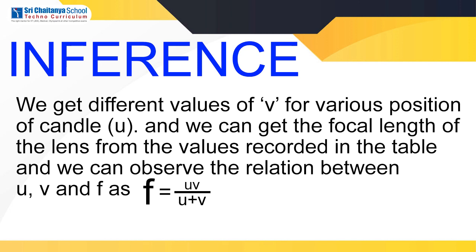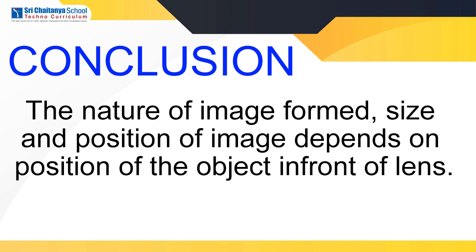Inference: we get different values of V for various positions of the candle, that is U, and we can get the focal length of the lens from the values recorded in the table. We can observe the relation between U, V, and F as: F = UV / (U + V). Conclusion: the nature, size, and position of the image formed depends on the position of the object in front of the lens.